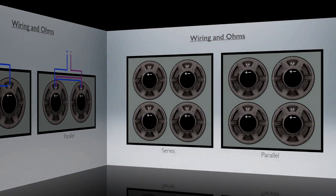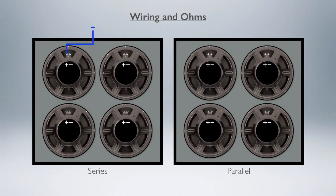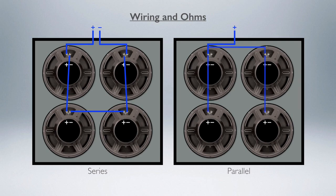This is what it looks like on a four cab. Again, the positive post goes to the first speaker and then gets daisy-chained through all of that done in series. And this is what it looks like in parallel, where the positive post is connected to all four at the same time and the negative is connected to all four as well.